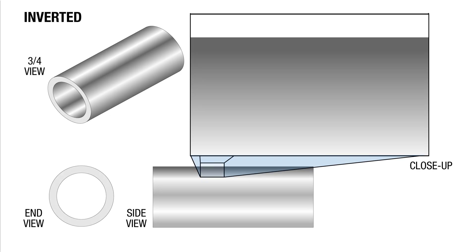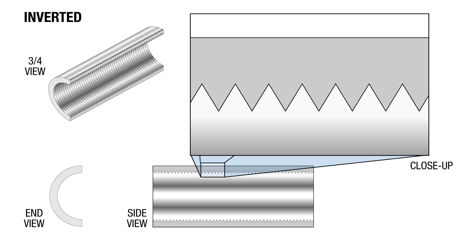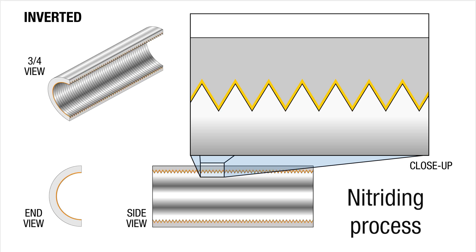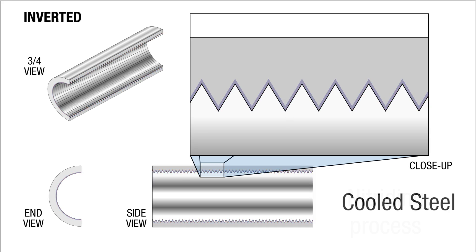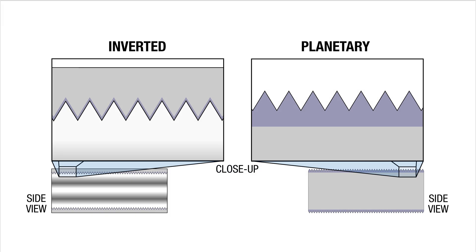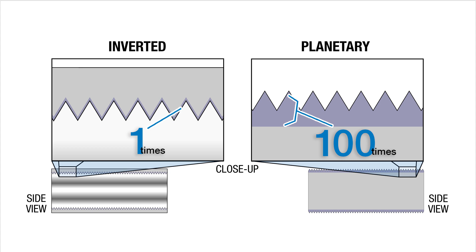On the other hand, manufacturers of the inverted roller screw typically machine the grooves first, followed by a less robust hardening process, resulting in a much thinner layer of hardness across the surface of the threads. Because the depth of the hardened material on the planetary roller screw is 100 times greater than that of the inverted roller screw, it is capable of handling higher loads, lasting much longer, and is far more resistant to deformation from shock loads.